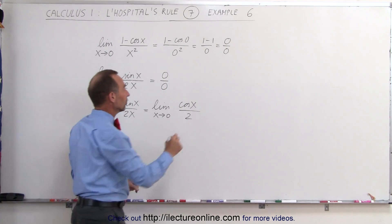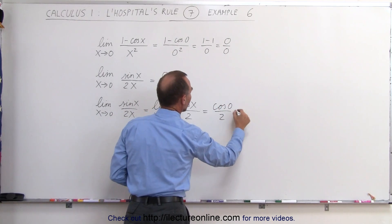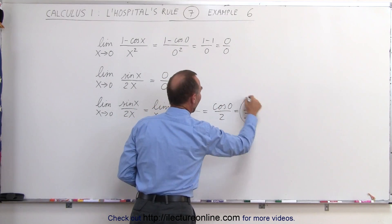When x approaches 0, this becomes the cosine of 0 divided by 2. The cosine of 0 is 1. That would be equal to 1 half.